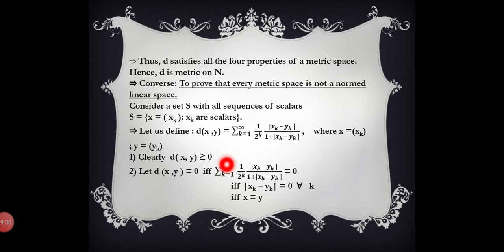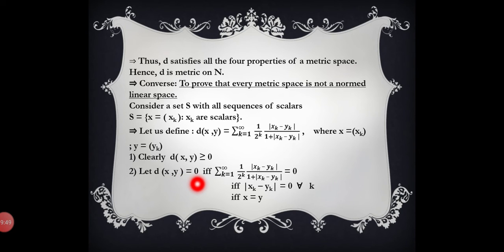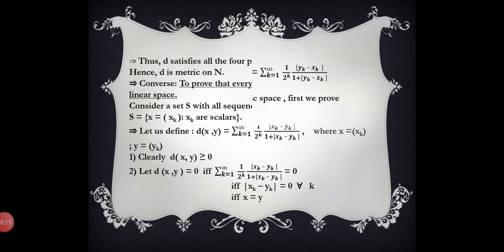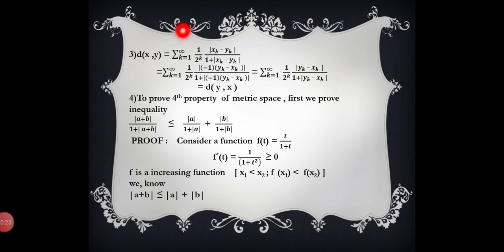The first property: d(x, y) ≥ 0. Obviously, since this is a summation of non-negative terms, it will always be greater than or equal to 0. The second property: d(x, y) = 0 if and only if Σ(k=1 to ∞) [1/2^k · |x_k − y_k| / (1 + |x_k − y_k|)] = 0, which holds if and only if |x_k − y_k| = 0 for all k, implying x = y, since x = (x_k) and y = (y_k).